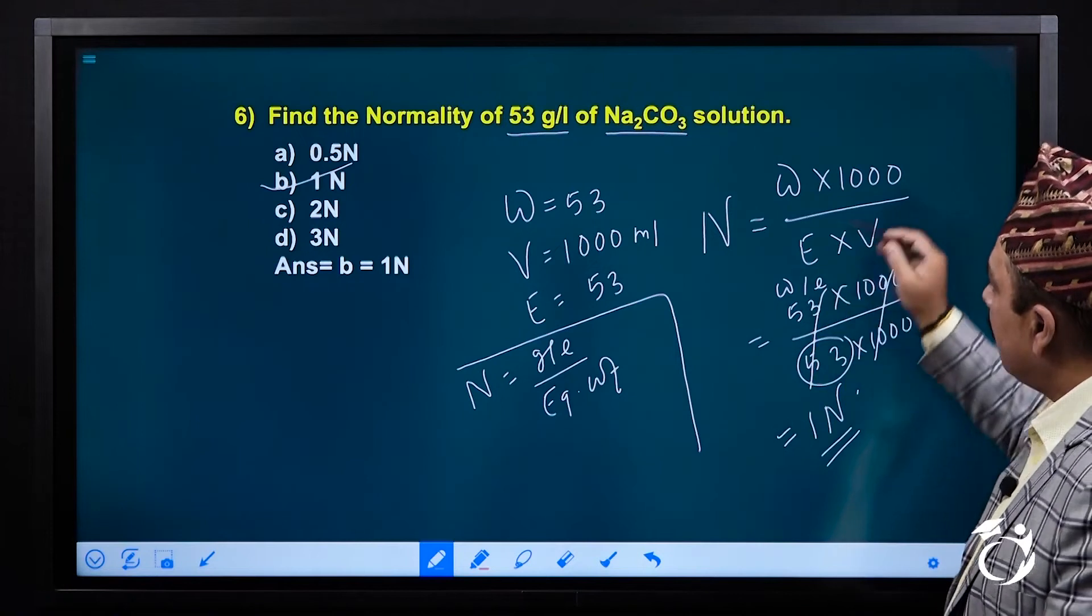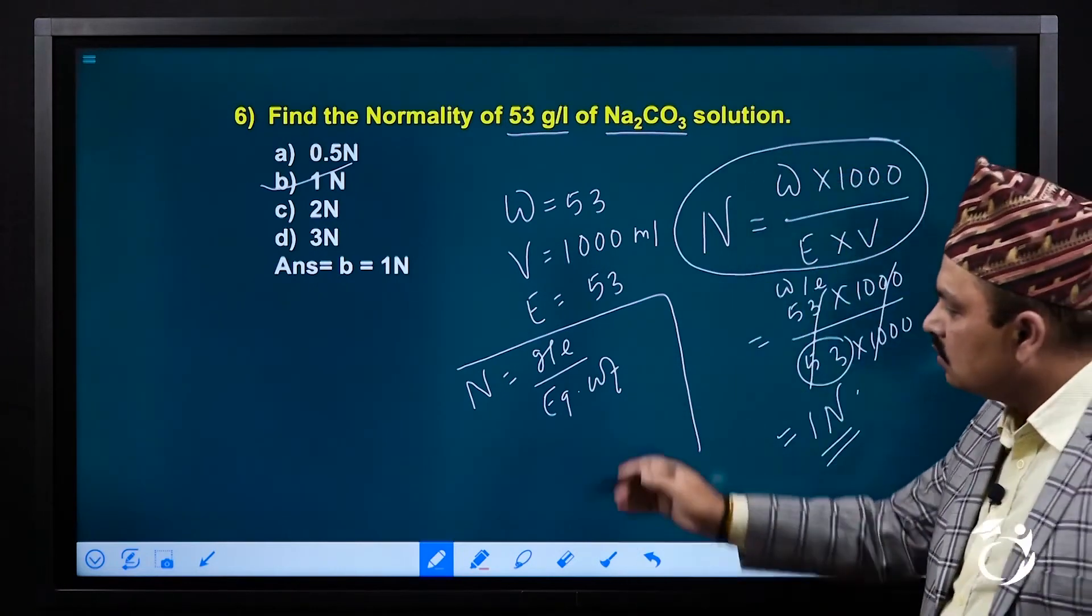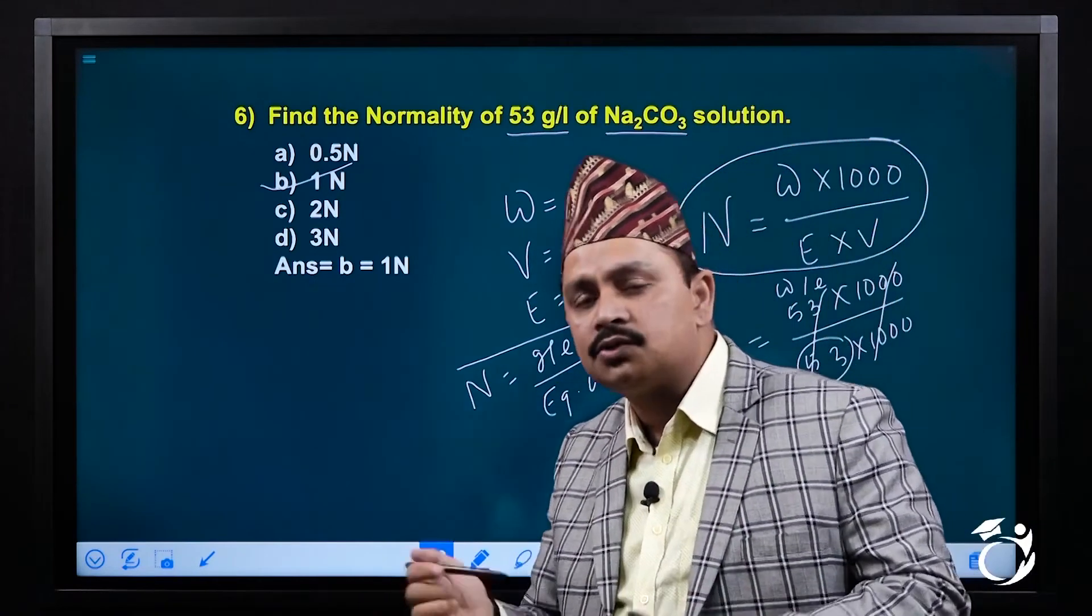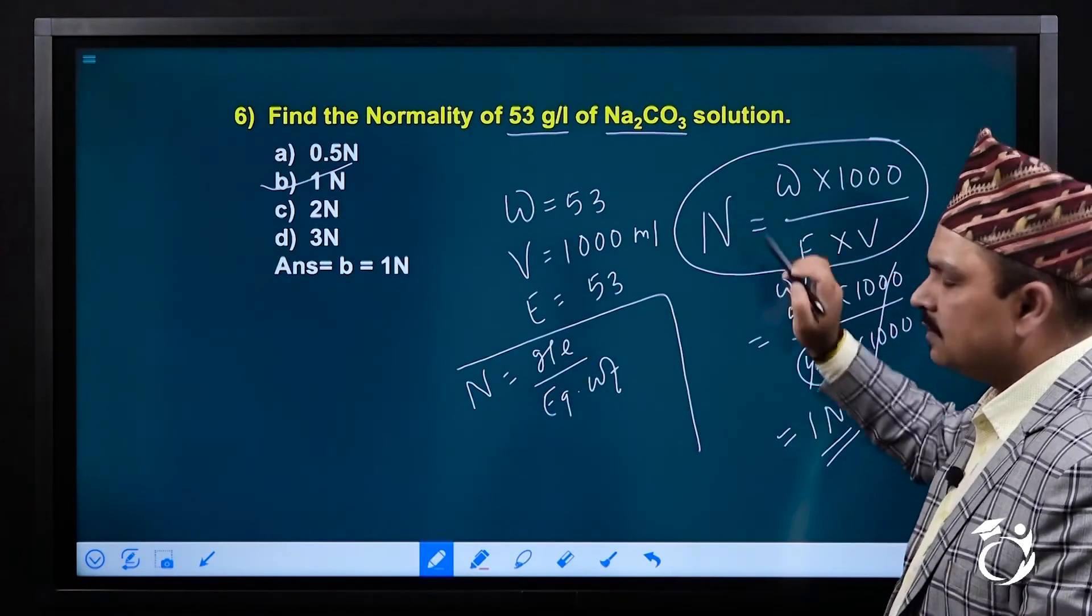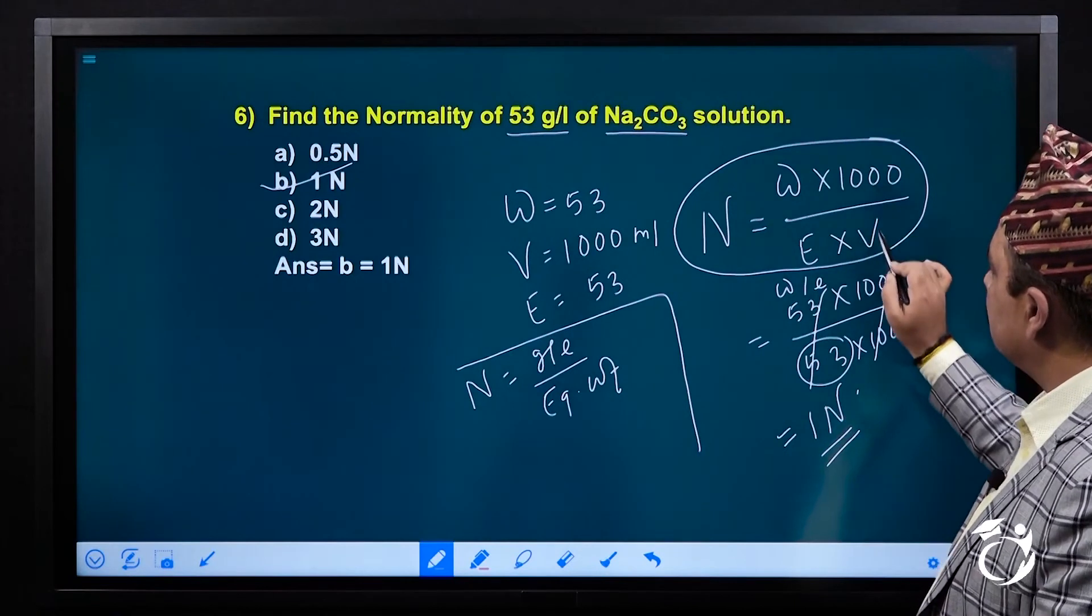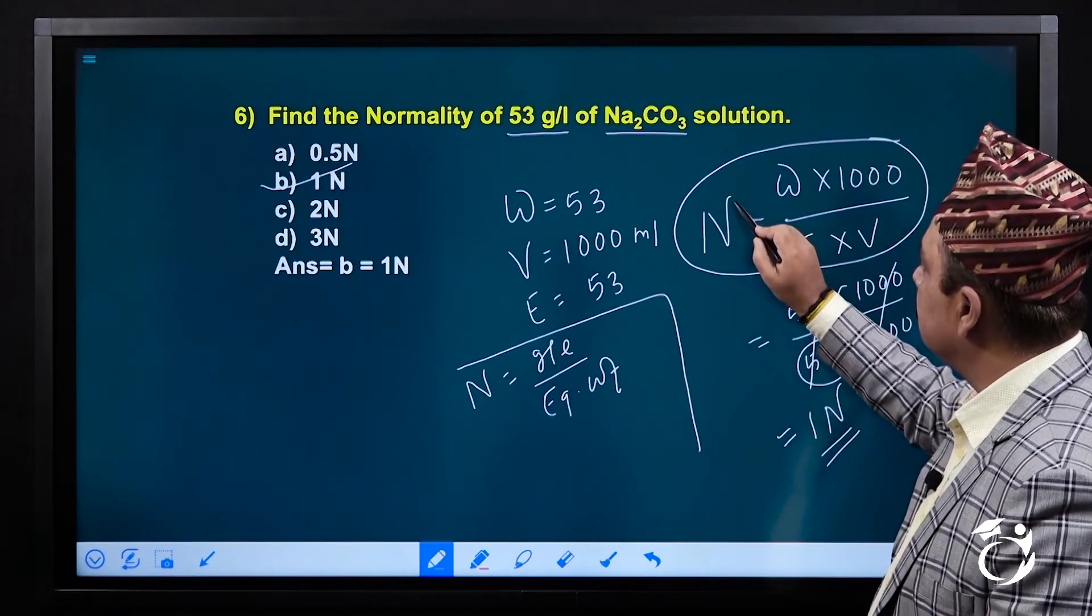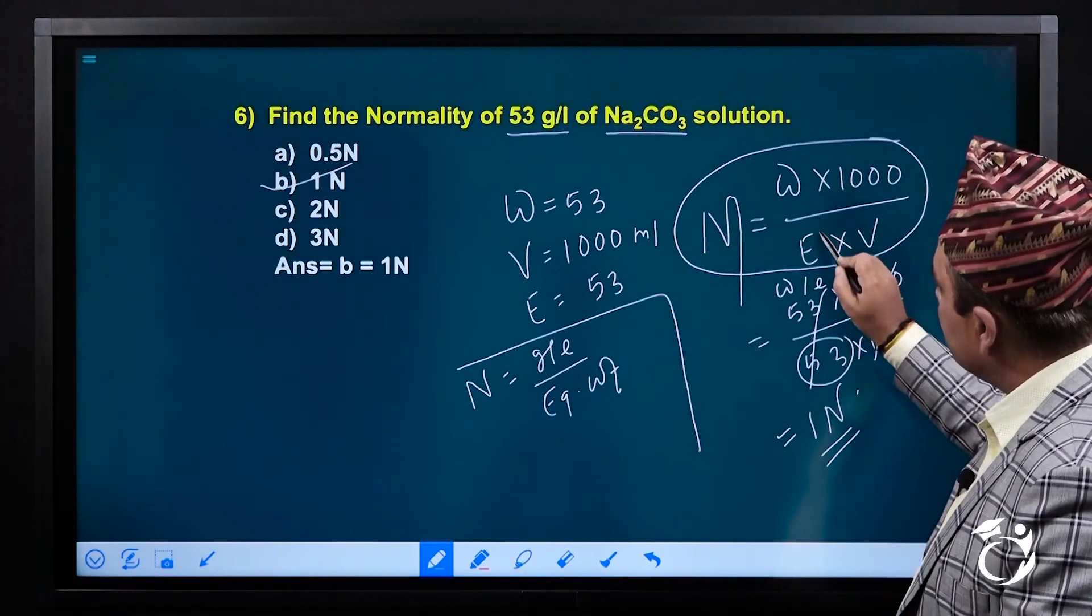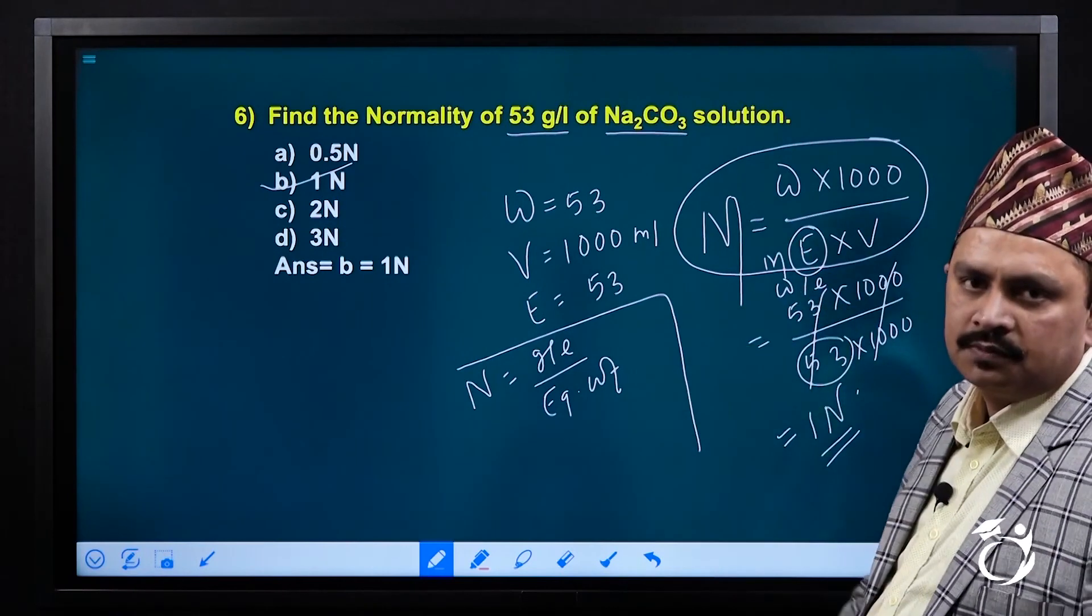So the relation is the same. We use single relation to get gram per liter. We use W into 1000 upon E into V. The 1000 is the volume in ml. Then the molarity is the same. This is the equivalent weight versus the molecular weight. So this is the equivalent weight.